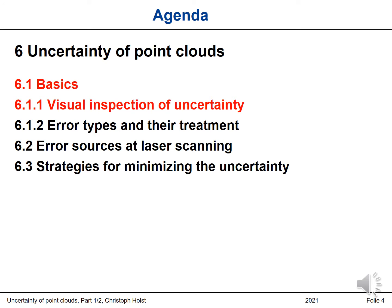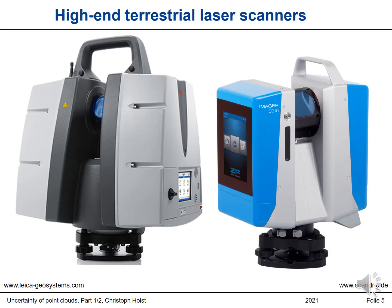Let's start with section 6.1: basics. I have split this section into 6.1.1 — visual inspection of uncertainty — and 6.1.2 — error types and their treatment. Most uncertainty sources are similar for static and kinematic laser scanning. Let's assume we have two high-end terrestrial laser scanners: two three-dimensional panoramic laser scanners. On the left is a Leica P50, and on the right is a Zoller+Fröhlich Imager 5060.